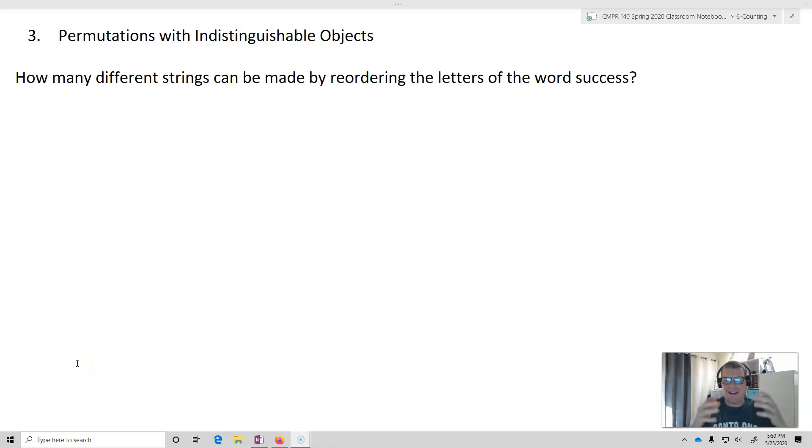All right. So now what we're going to look at is an idea of permutations with indistinguishable objects. That is, where some of the objects inside of our sets are exactly the same. They're identical.